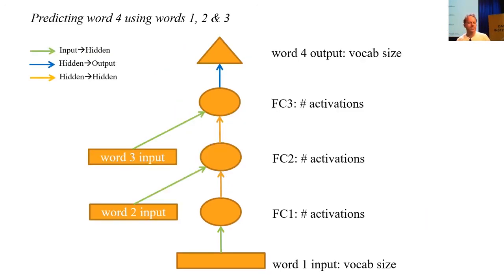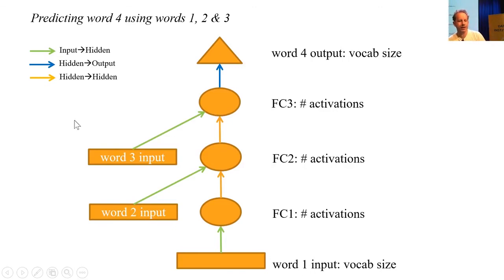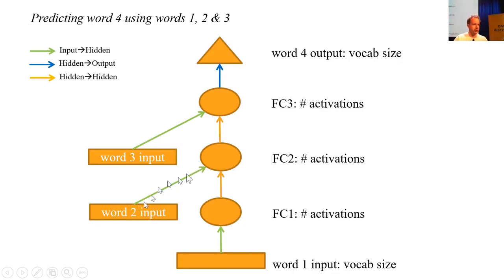What if we wanted to predict word four using words one, two, and three? It's basically the same picture as before with one extra input and one extra circle. Each time we go from rectangle to circle we're doing the same thing — we're doing an embedding, which is just...